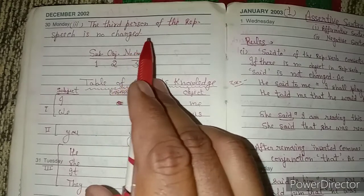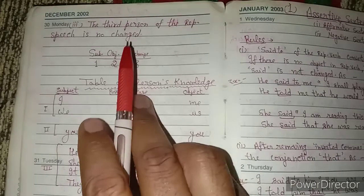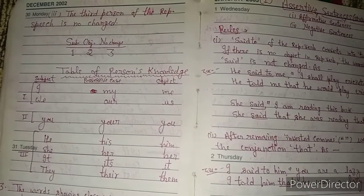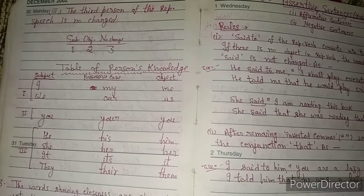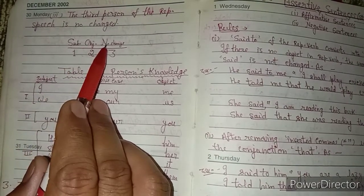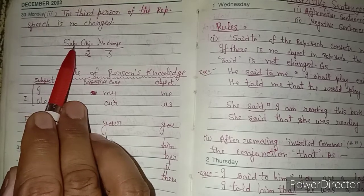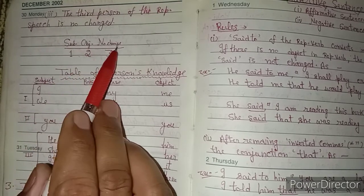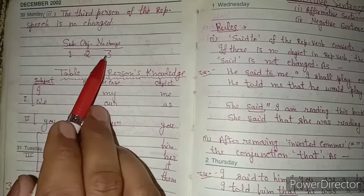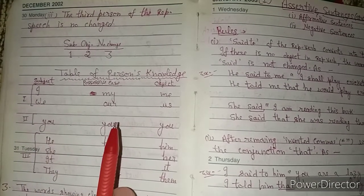The third person of the reported speech has no change. To remember this easily, use the short form: S-O-N. S stands for Subject, O stands for Object, N stands for No change. First person changes according to subject, second person according to object, third person — no change.